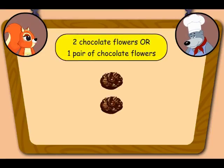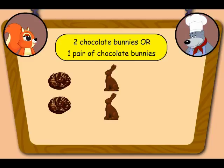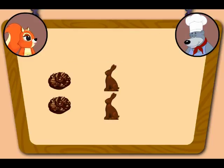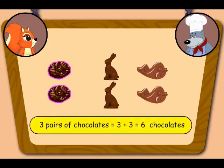Okay Mr. Teddy. There are two chocolate flowers, or one pair of chocolate flowers. Also, there are two chocolate bunnies, or one pair of chocolate bunnies, and two chocolate fishes, or one pair of chocolate fishes. So there are three pairs of chocolates.